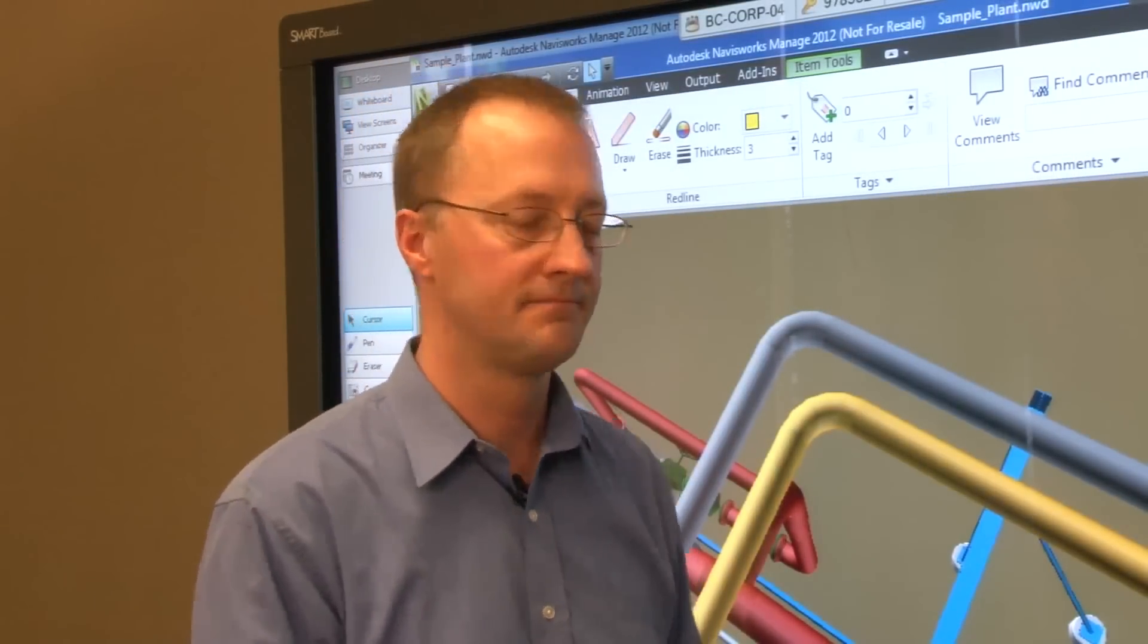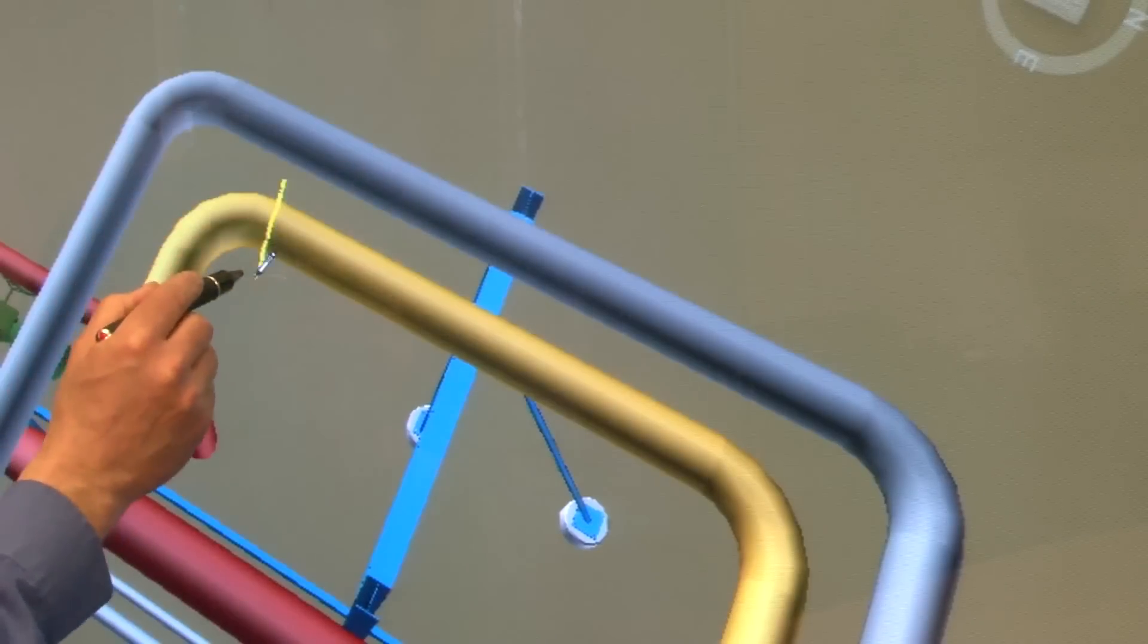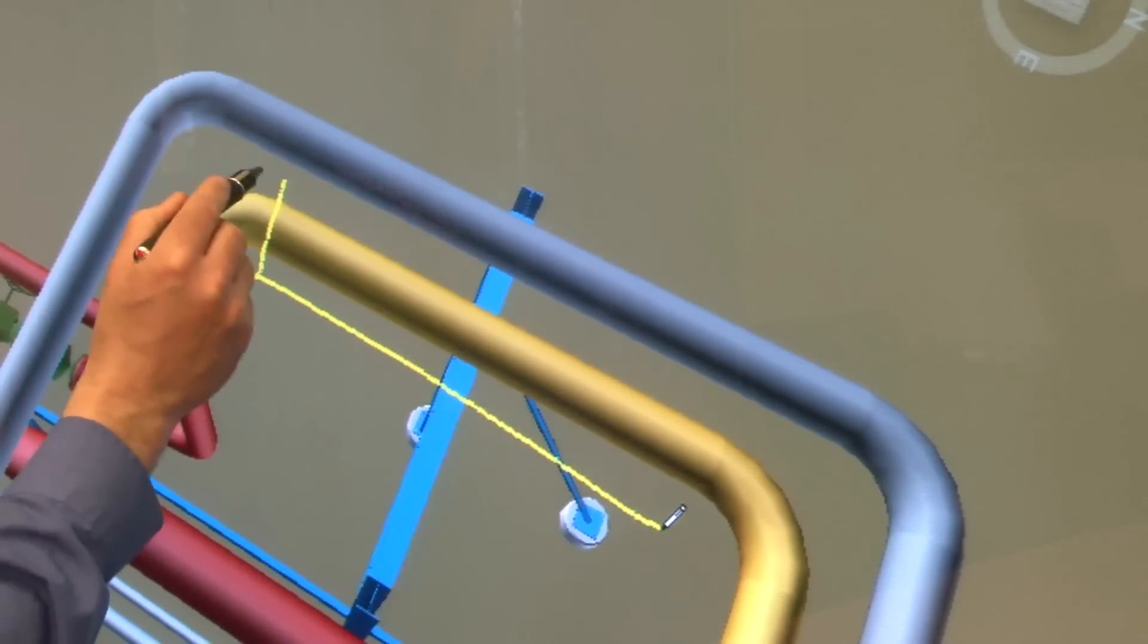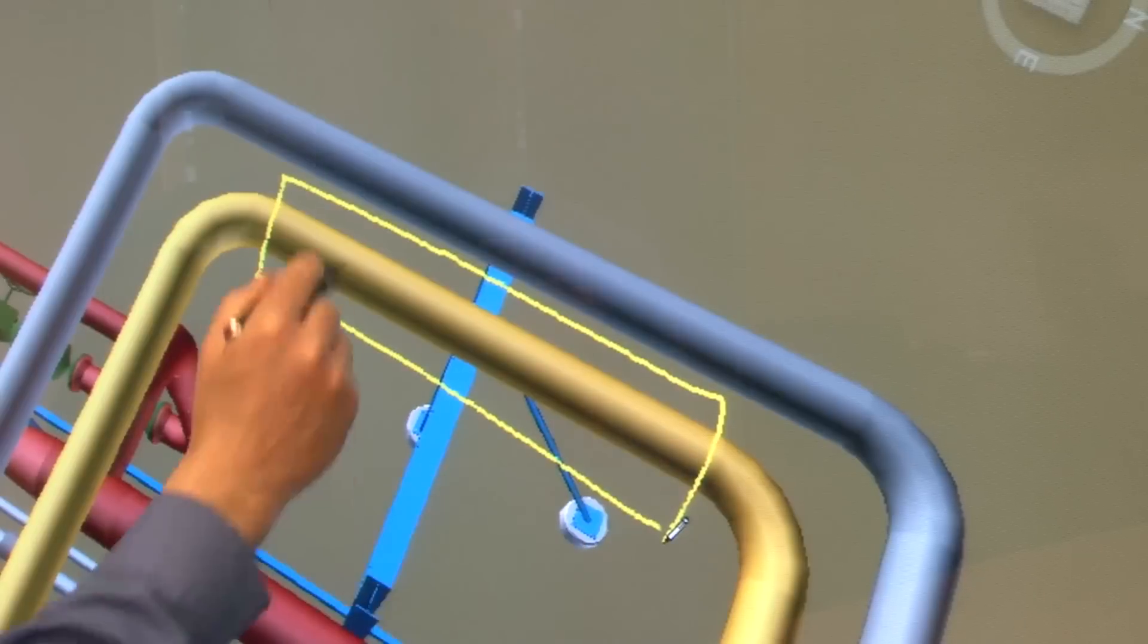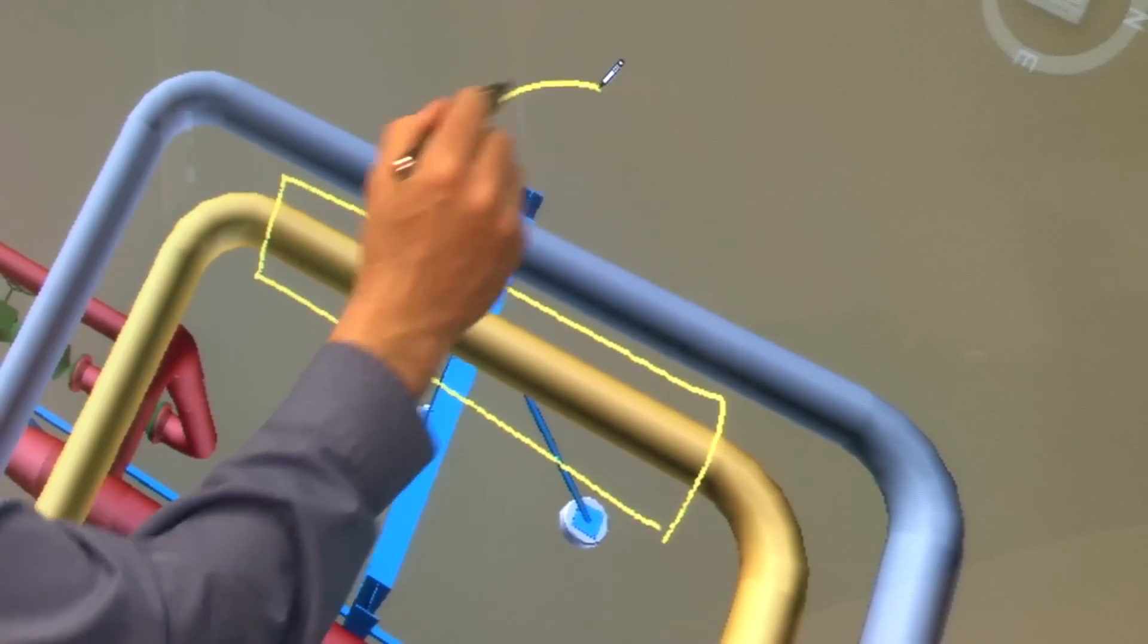Any notes that you write on the model are now captured as part of the Navisworks file, not as a separate ink layer. This integration of the pen tray pen with the Navisworks markup tool helps you capture and manage notes more effectively during a design review.